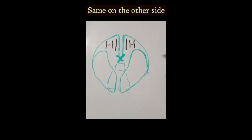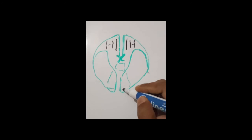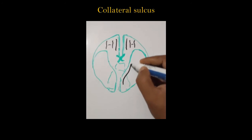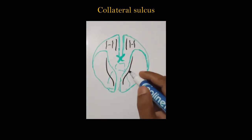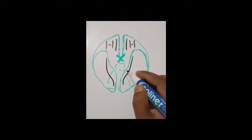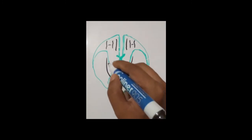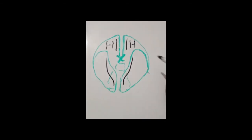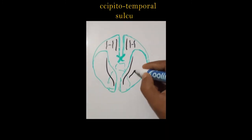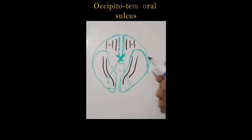Here from this region the collateral sulcus will run. Just above the collateral sulcus, the area is the parahippocampal area. And here the occipitotemporal sulcus.